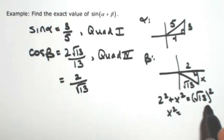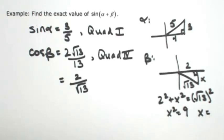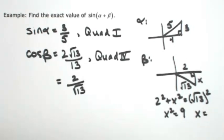So x squared is 13 minus 4, so this is 9. So x is plus or minus 3. And because we're in the fourth quadrant, that's going to be negative.